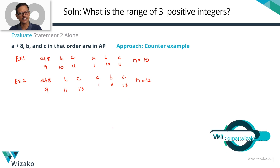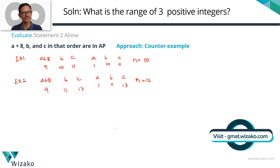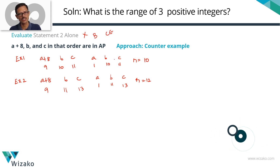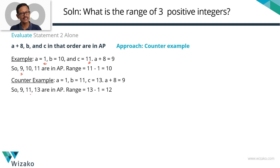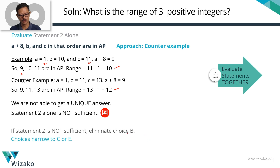If A+8, B, and C are in an AP, we do not get a unique value for the range — we get multiple values, in fact infinitely many possible values. Statement 2 alone is also not sufficient. We were down to B, C, or E; since statement 2 is also not sufficient, eliminate answer option B. We're down to C or E. Let's combine the two statements to check.